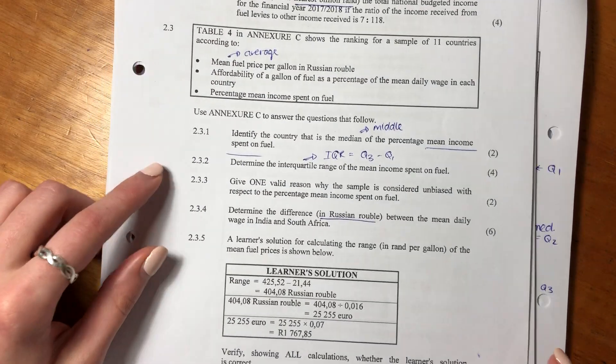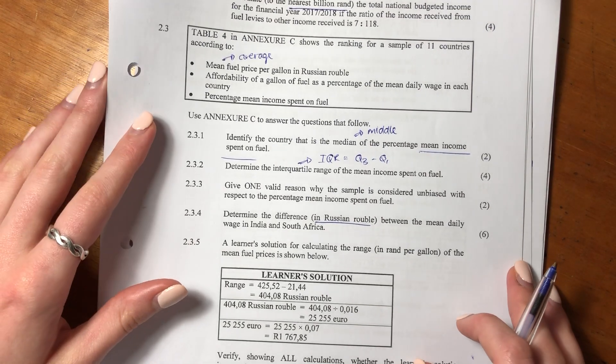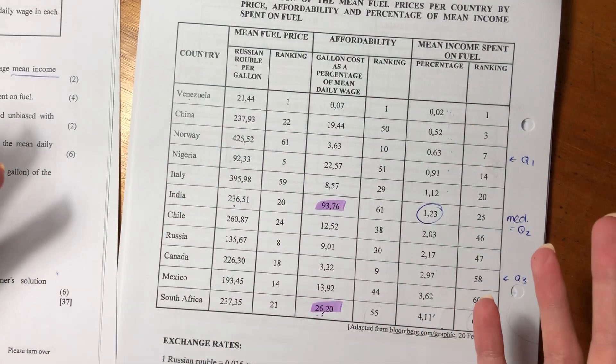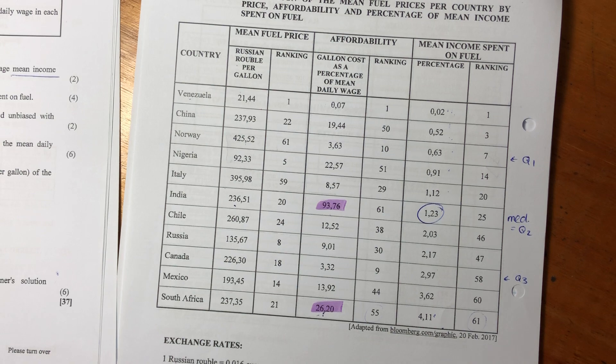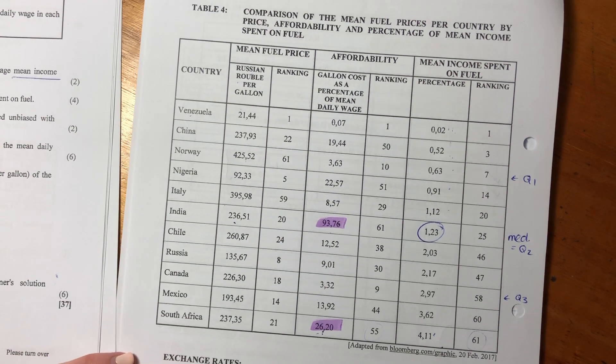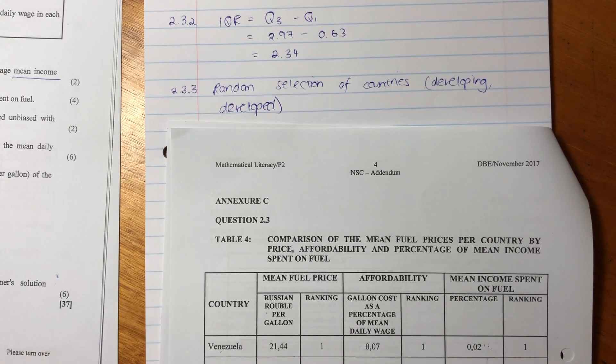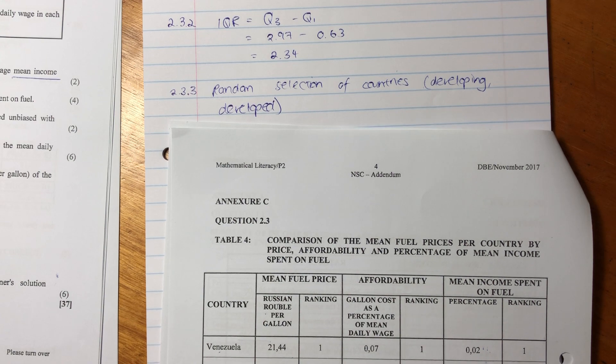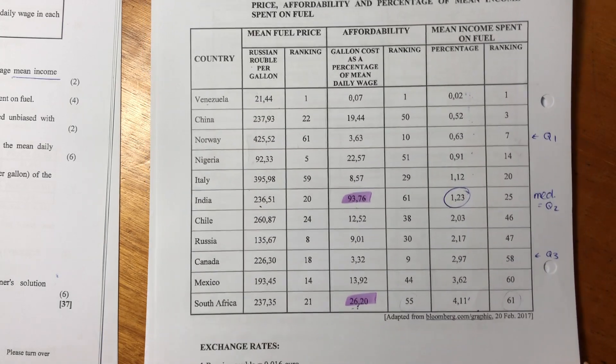Let's now go to 2.3.3. So this is an application question. It says give one valid reason why the sample is considered unbiased with respect to the percentage mean income spent on fuel. The reason it's unbiased is because it's just a random sample of countries. When something's biased, it means that you've specifically chosen them. But here, it doesn't look like they're specifically chosen. It's just countries all over the world. You can go to the memo and see the variety of answers they give you. But the one that I wrote over here is I just said it's a random selection of countries. There's developing and developed, like South Africa and developed countries like Canada.